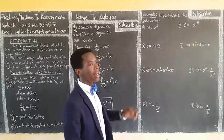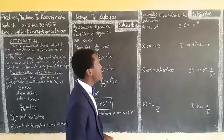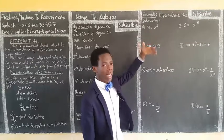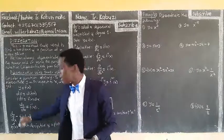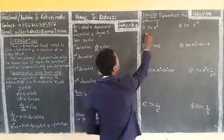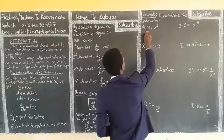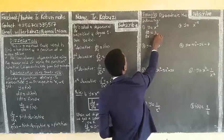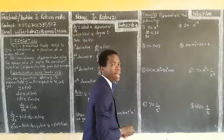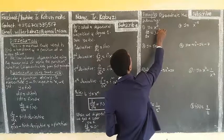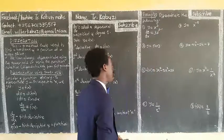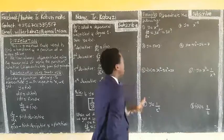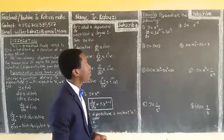Differentiate the following. Let us see how we can do these examples. This is a function of y and x. So the differential we are going to get is dy/dx. My dy/dx is going to be: I get the power, which is 3, then x. After that, I reduce this power by 1. So my answer will be 3x squared. So we have differentiated that function.